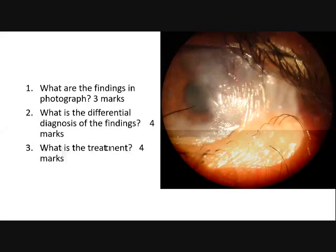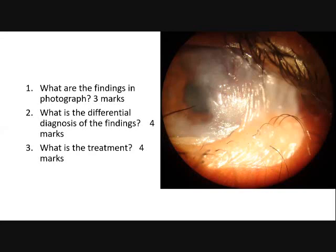Why grafting? For restoration of corneal integrity. To maintain fornices. So unless you graft, if you only separate the adhesions, they will adhere again and there will be recurrence of symblepharon.